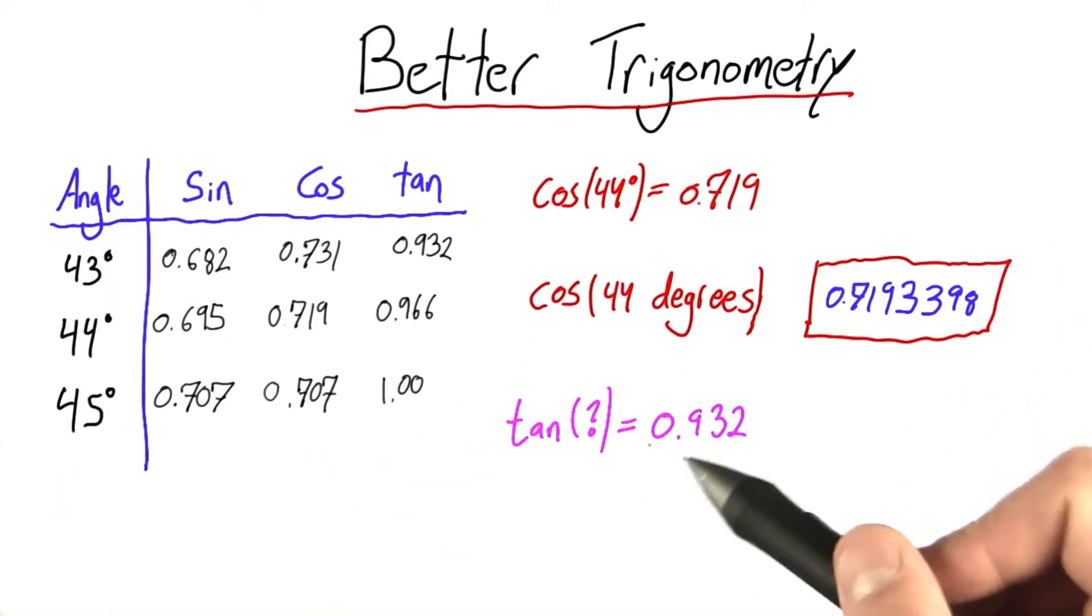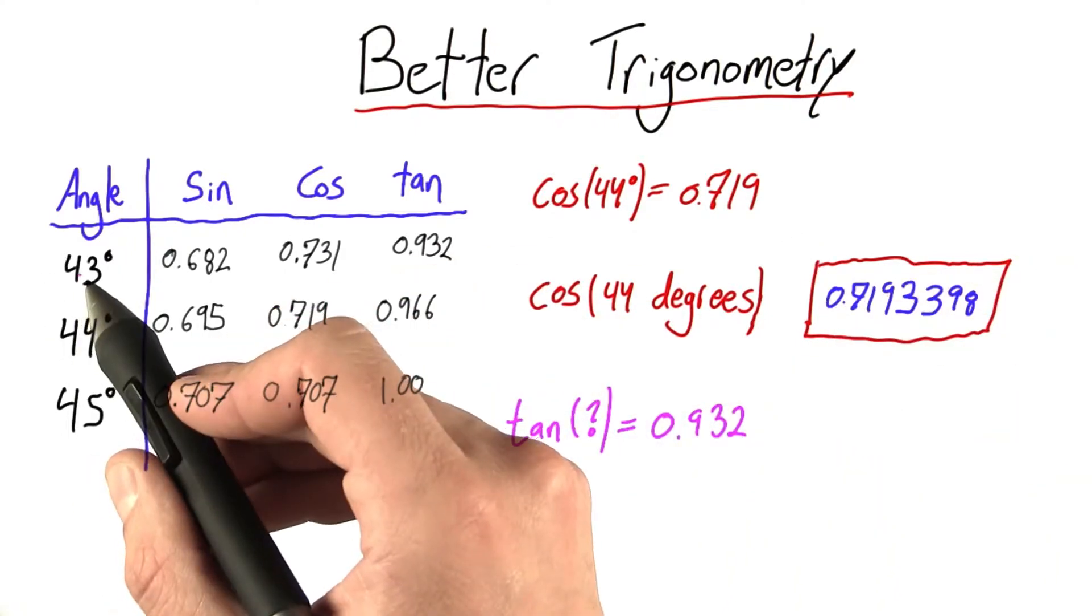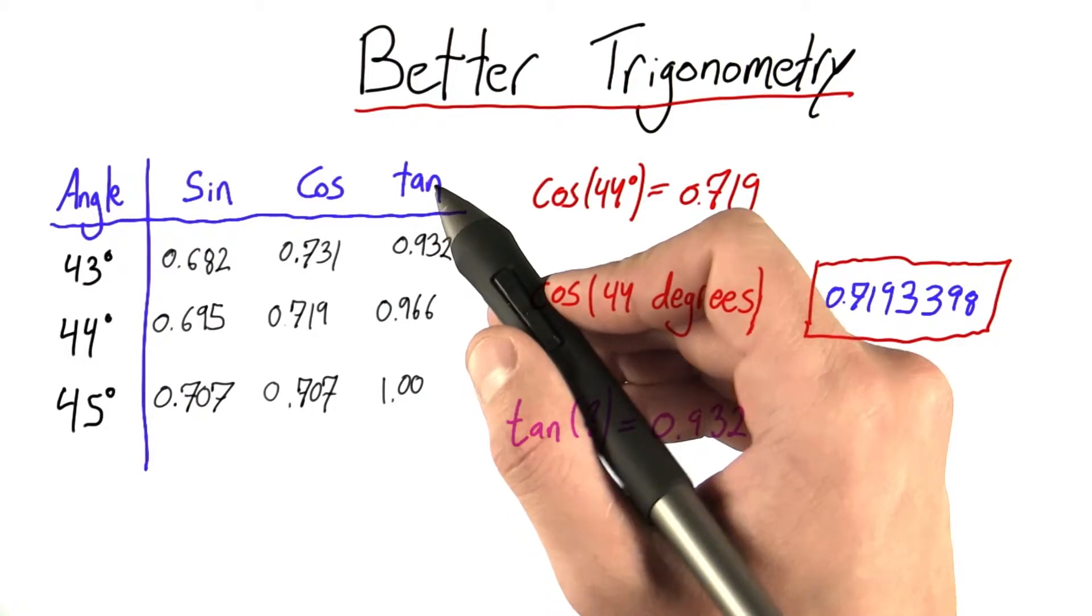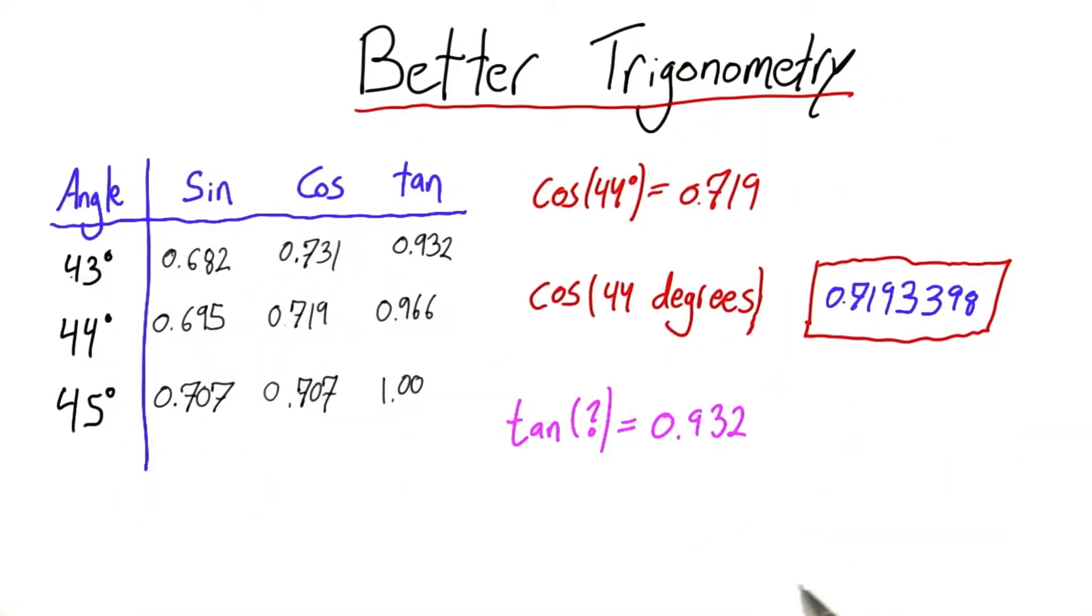What we're doing here is sort of the opposite of computing a tangent. Instead of looking at an angle and calculating the tangent, we're looking at the tangent and calculating the angle. So what we're doing is the inverse tangent. It's the exact opposite of taking a tangent.